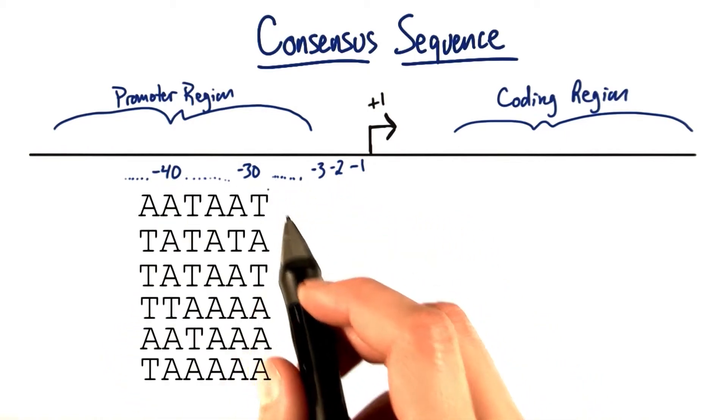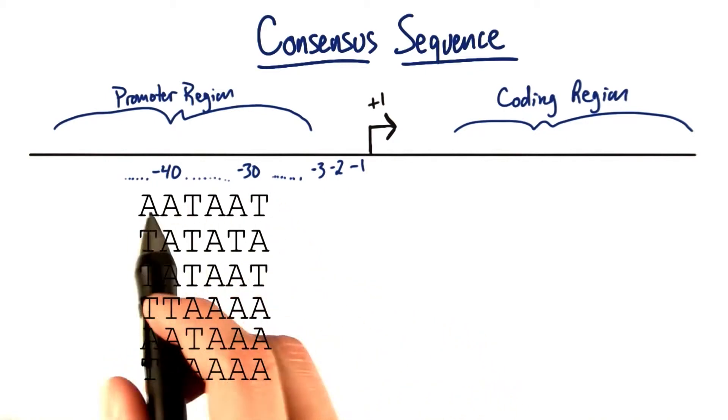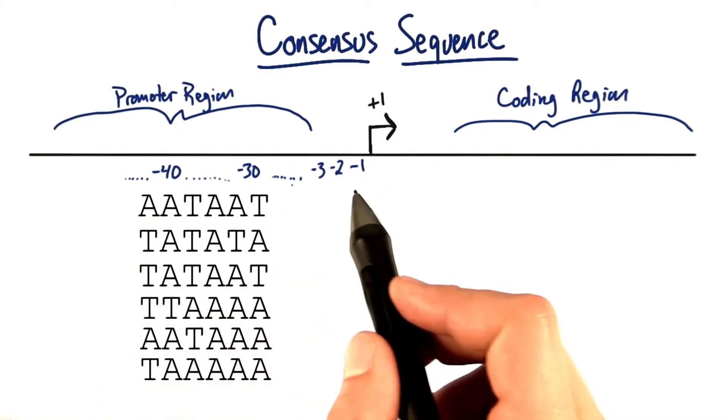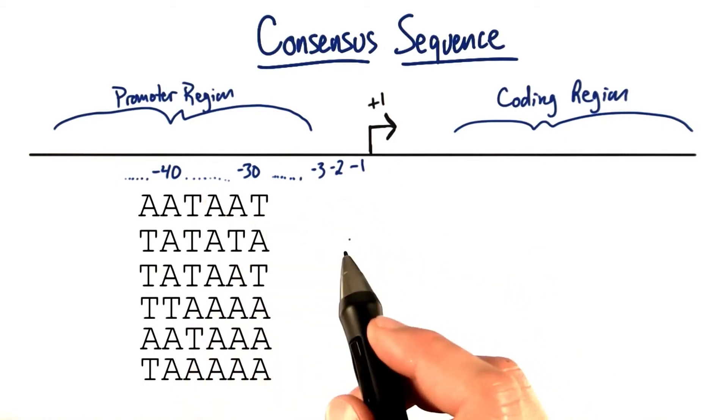So let's focus in on this region, about 30 or 40 letters or base pairs upstream or in front of this transcription initiation site.